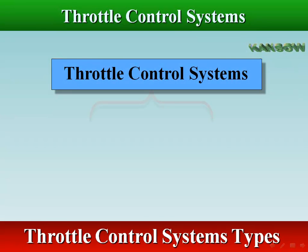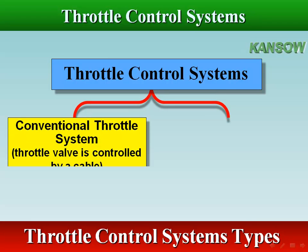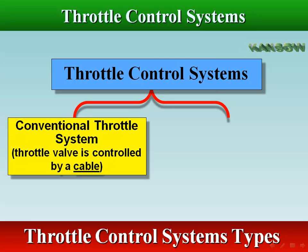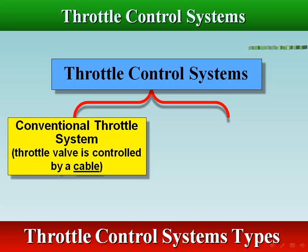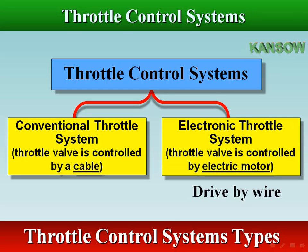There are two types of throttling systems used in vehicles. The conventional throttle system, where the throttle valve is controlled by a cable, and the electronic throttle system, where the throttle valve is controlled by an electric motor.